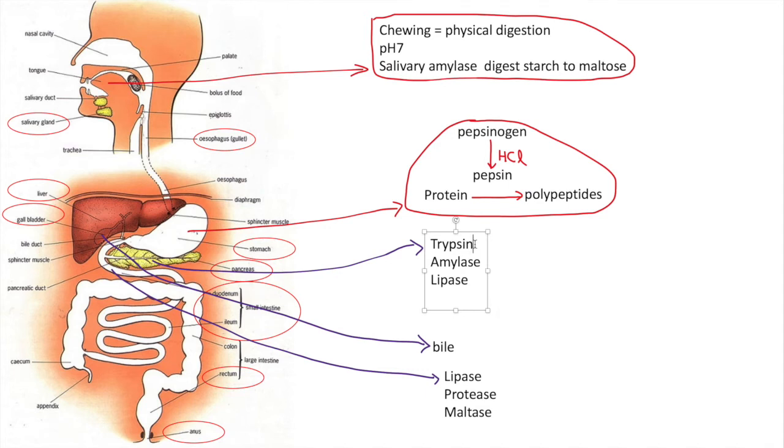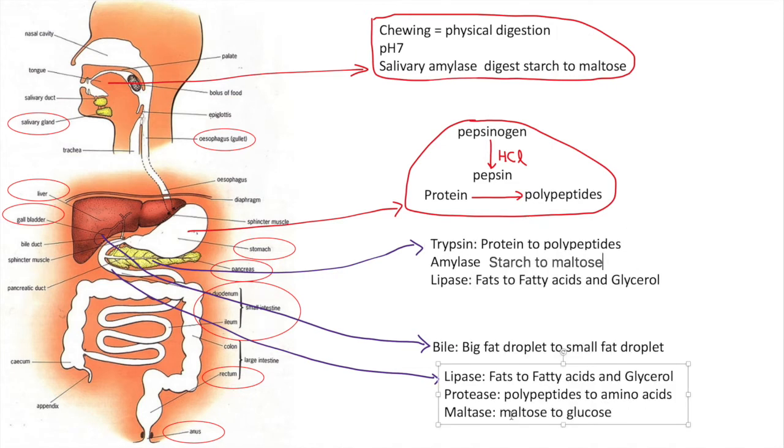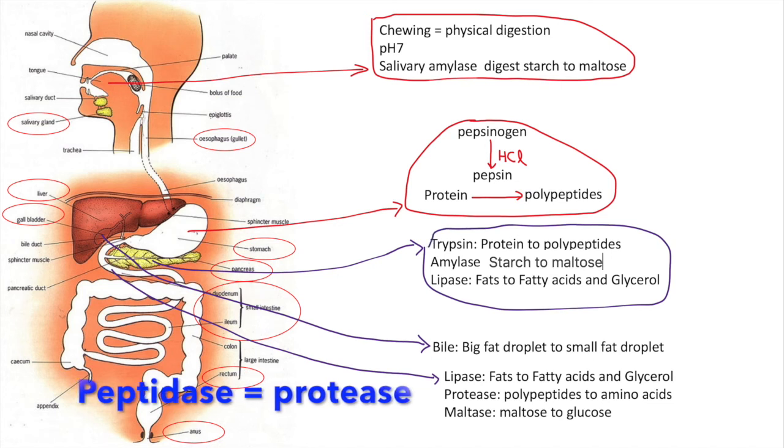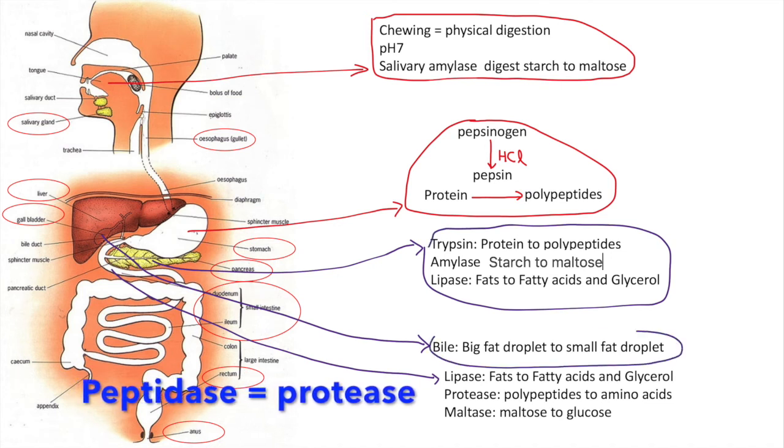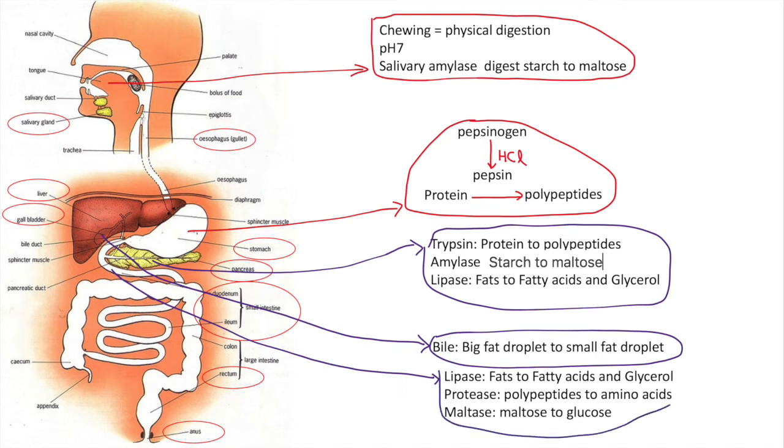For digestion in the small intestine, it's quite straightforward to match what material is broken down by what enzyme. Amylase breaks down starch to maltose, trypsin breaks down proteins, lipase breaks down lipids, peptidase breaks down polypeptides to amino acids, maltase breaks down maltose to glucose. The vocabulary that's difficult would be trypsin, pepsin, and bile that doesn't match its substrate.